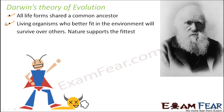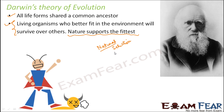Darwin also said that living organisms who better fit in the environment will survive over others — nature supports the fittest. If there are two organisms and one of them is able to survive better, nature will support that organism and it will live on generation after generation. The one who is not able to adjust with the environment, or who is not perfectly fit for the environment, will decrease in number and gradually become extinct. We can see there are many different organisms which were existing sometime and then became extinct. We will talk about this concept — which Darwin described — when we speak about the concept of natural selection.